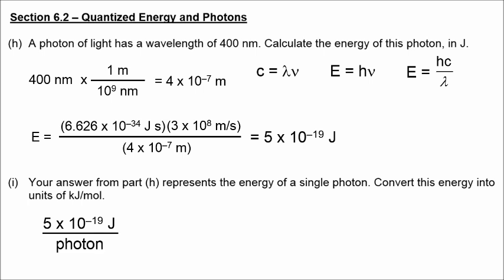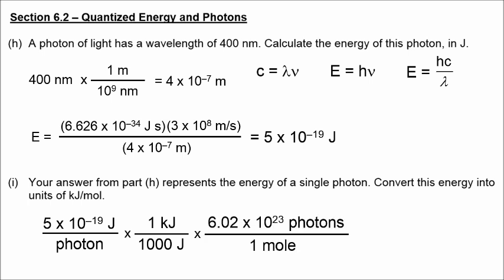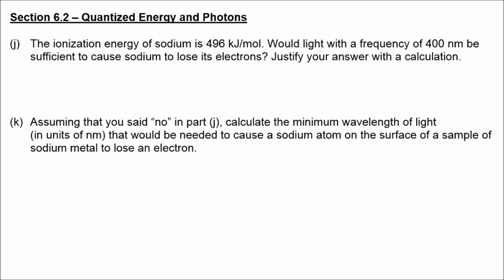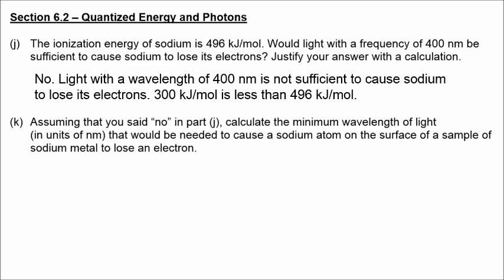Let's convert this into kilojoules per mole. From joules to kilojoules, divide by 1000. Then multiply by Avogadro's number of photons per mole, giving us 300 kilojoules per mole. Part J asks whether light with a wavelength of 400 nanometers is sufficient to cause sodium to lose its electrons. The answer is no, because 300 kilojoules per mole is not high enough compared to 496 kilojoules per mole — the light would shine on the surface but would not cause atoms to lose electrons.